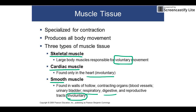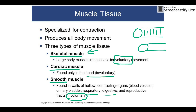Smooth muscle is involuntary and makes up most internal organs — the digestive tract squeezing things along, respiratory areas, and reproductive tracts all have involuntary contractions from smooth muscle. So the only muscle we have conscious control over is skeletal. Smooth muscle got its name because under the microscope, skeletal and cardiac muscles have stripes called striations, but smooth muscle does not — it looked smoother to early observers, and the name stuck.